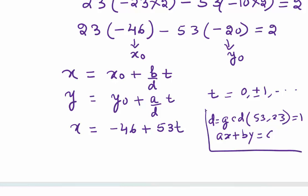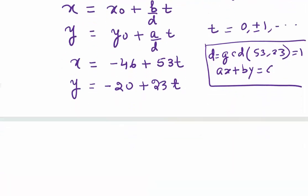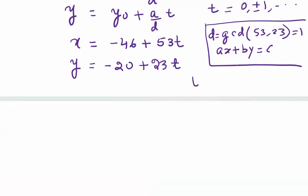y will be, what is y0? -20. We have a plus sign. a value is 23, so y = -20 + 23t. This is the general solution, where t = 0, ±1, ±2, and so on. So you have found the general solution.